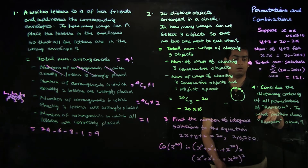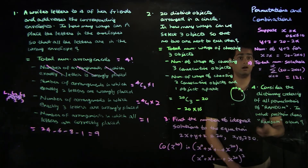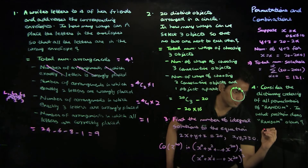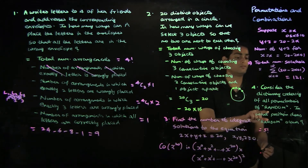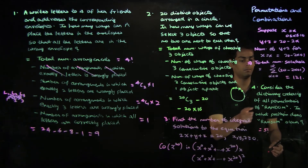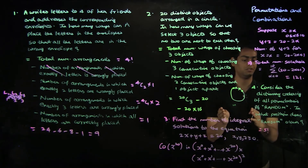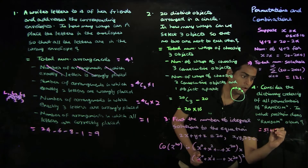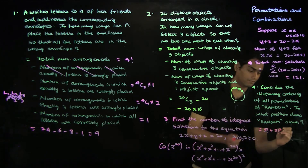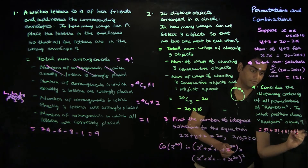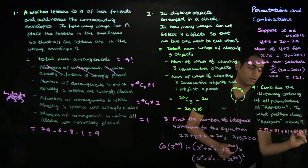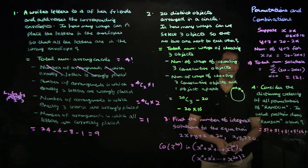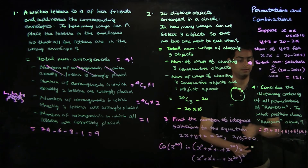Notice that A, N, D, O, and M all occur before R in the alphabet. So there are 5 factorial words starting with A, 5 factorial starting with N, 5 factorial starting with D, 5 factorial starting with O, and 5 factorial starting with M — all of which occur before RANDOM in the dictionary ordering.